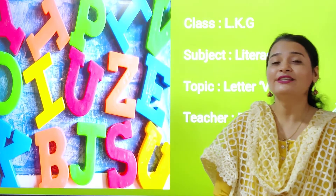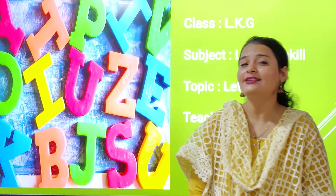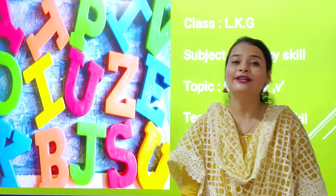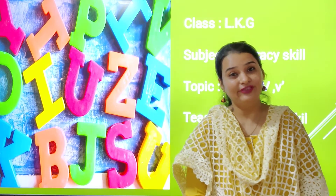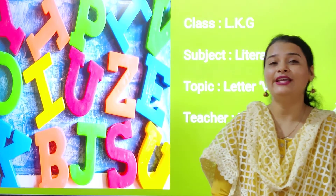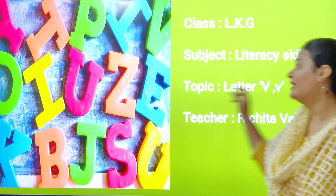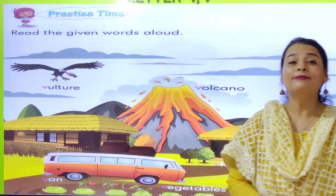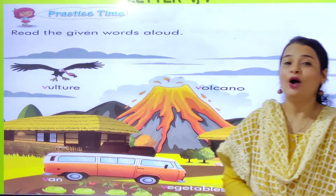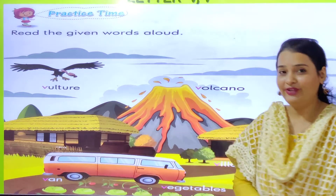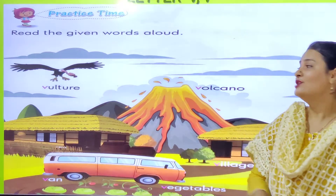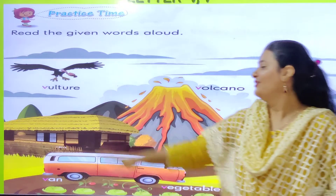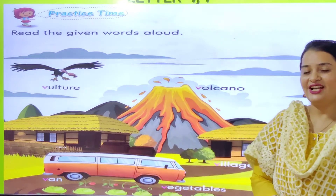So my dear students, today in literacy skill class, we are going to learn letter V — how can we write capital letter V and how can we write small letter V. But before that we will see some objects that start from letter V. So, V for vulture.